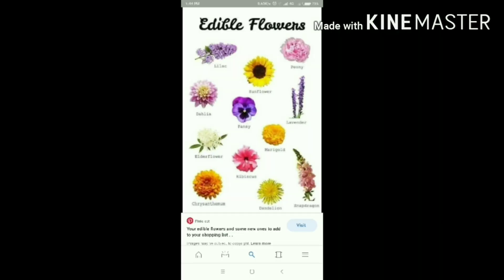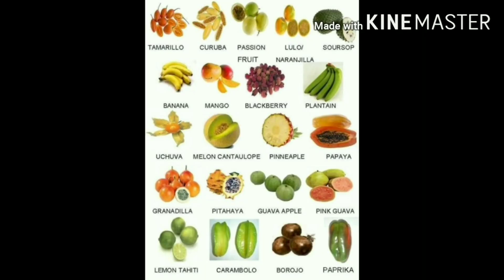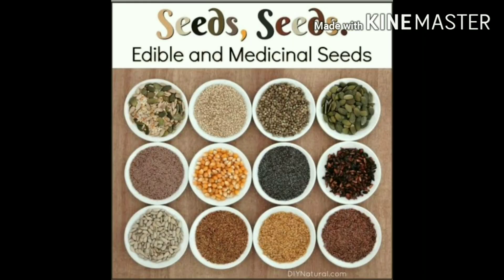For fruit: ash gourd, banana, apple, orange, grape, mango. For seed: green peas, rice, wheat, corn, barley, oats.